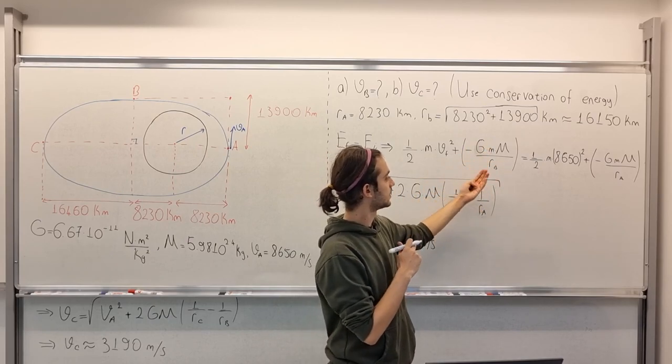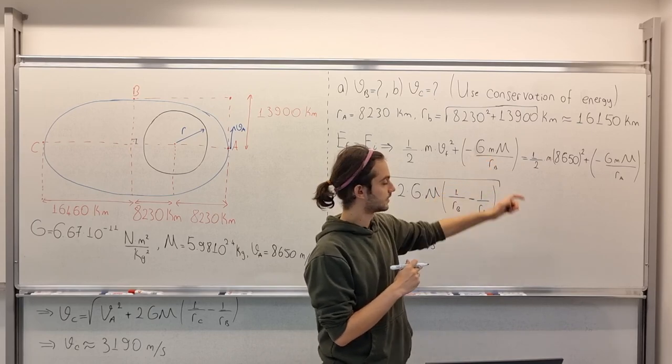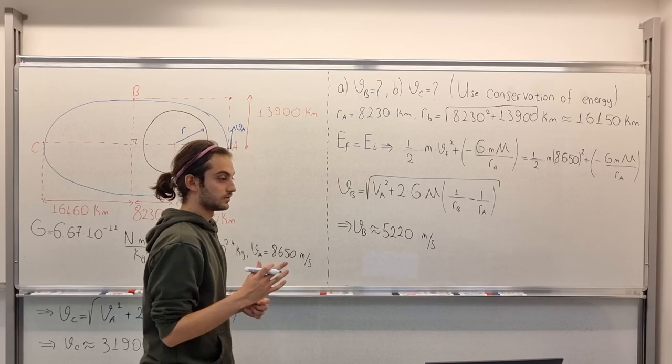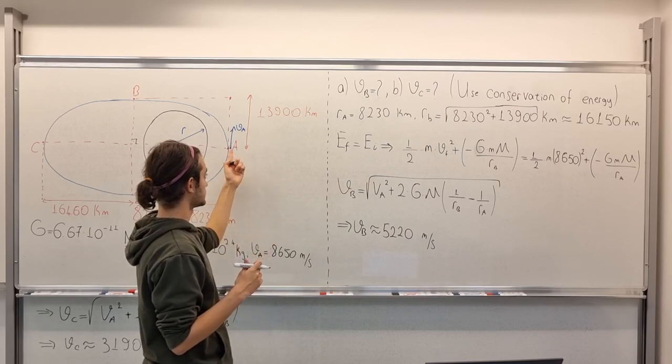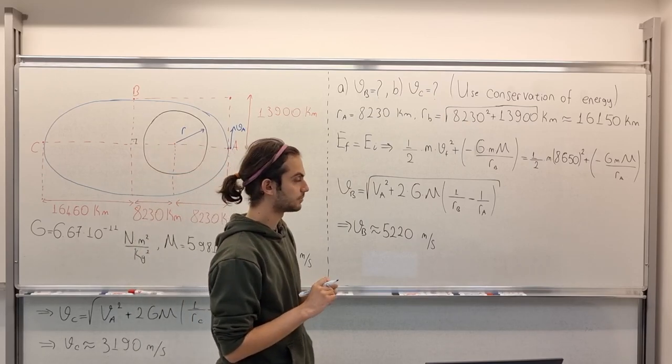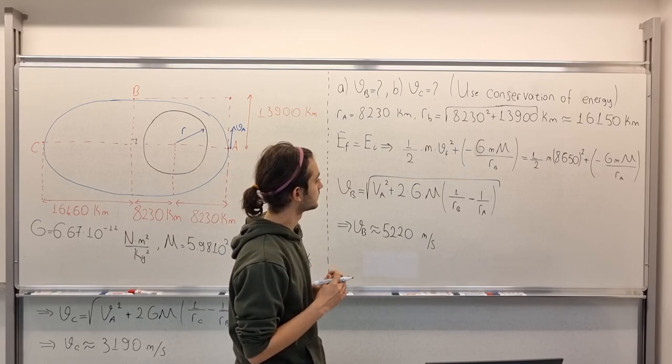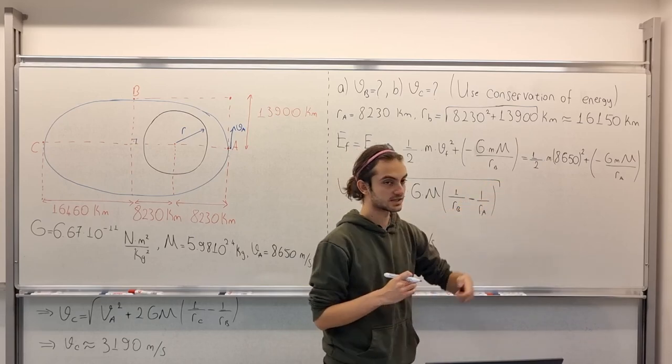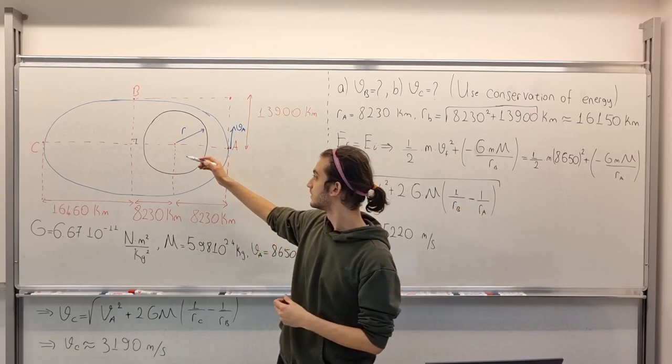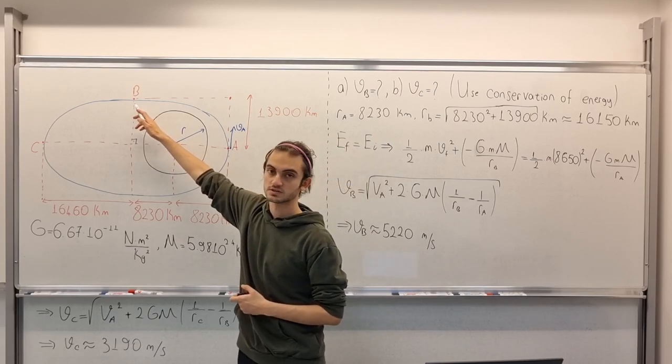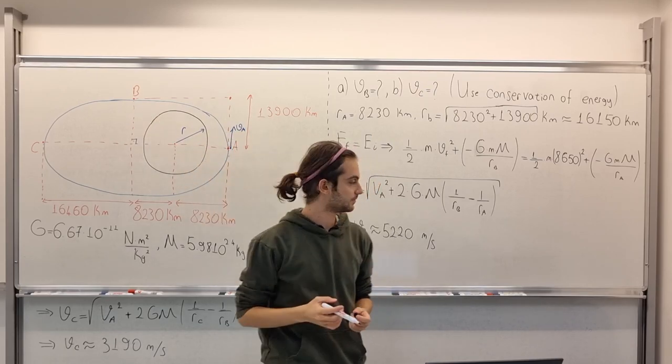Equals one half m VA squared plus minus G M m over RA. Here, the lowercase m represents the mass of the satellite. The uppercase M represents the mass of Earth. And the RB represents the distance from the center of Earth to the points B, or points A, respectively.